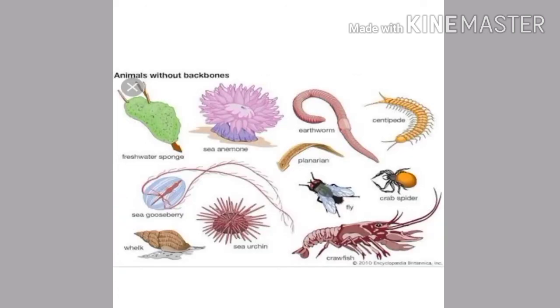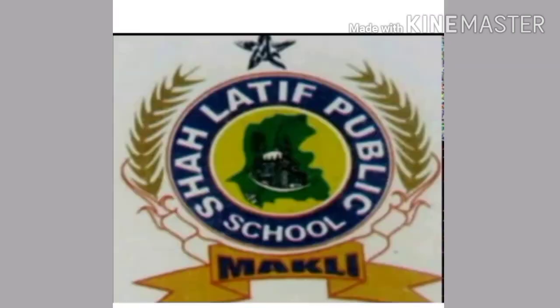Invertebrates are divided into six classes: arthropods, worms, molluscs, sponges, cnidarians, and echinoderma.